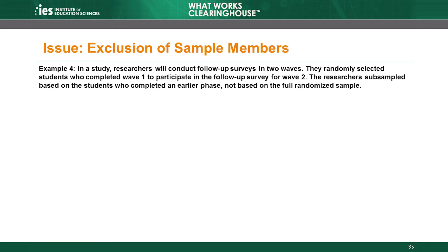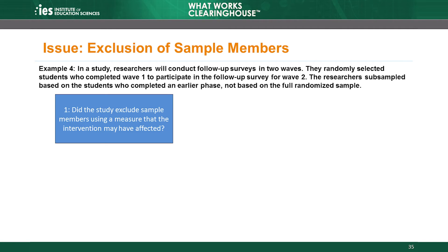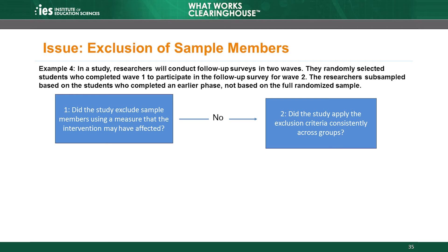One last example. In a study, researchers will conduct follow-up surveys in two waves. They randomly selected students who completed Wave 1 to participate in the follow-up survey for Wave 2. In this case, the researchers subsampled based on the students who completed an earlier phase, not based on the full randomized sample. Did they base the decision on something that the intervention could have affected? No — they based it on random subsampling. Did they apply the exclusion consistently across groups? The answer is no, because they applied the exclusion to the subset of each group that responded to the first wave, not to the full randomized sample. This means that the exclusions between Wave 1 and Wave 2 represent attrition. The study must assess attrition separately at both time points relative to the full randomized sample, and the attrition calculation for Wave 2 should count all students who left the study between randomization and Wave 2 as attrition.